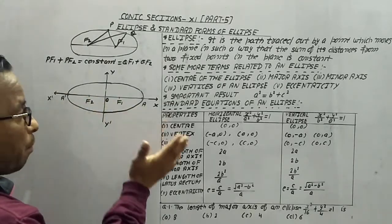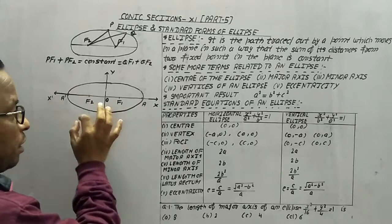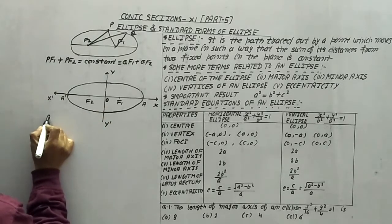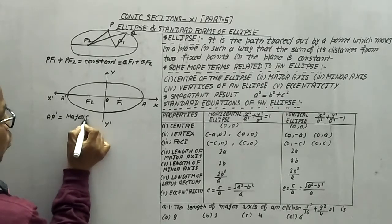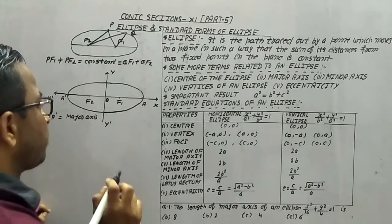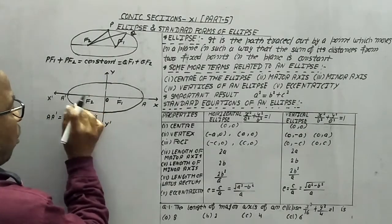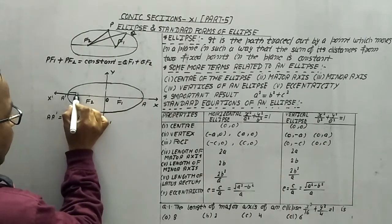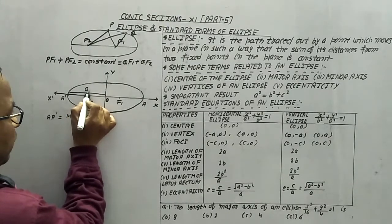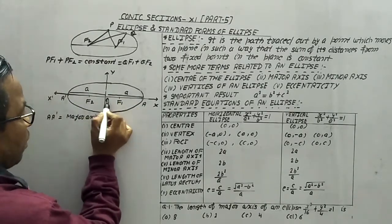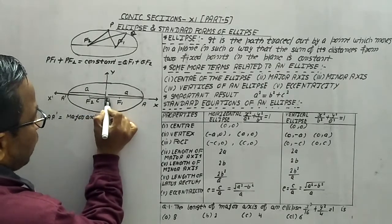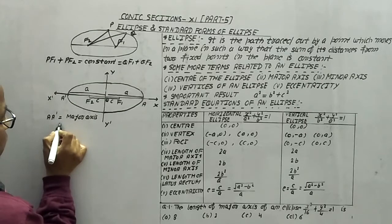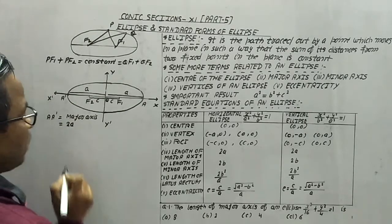Major axis: the line segment passing through the foci and joining the end points of the ellipse is known as the major axis. The segment A to A' represents the major axis, and the length is always taken as 2a. Because this is a symmetrical figure, the length OA and OA' — known as the semi-major axis — are each equal to a. The distance between the foci is always taken as 2c, so OF1 = OF2 = c.